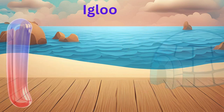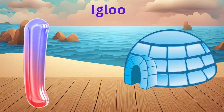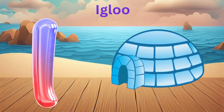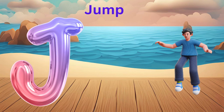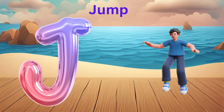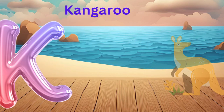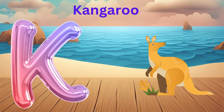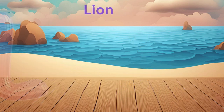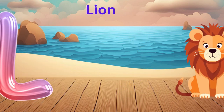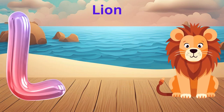I is for Igloo, I-I-Igloo. J is for Jump, J-J-Jump. K is for Kite, K-K-Kite. L is for Lion, L-L-Lion.